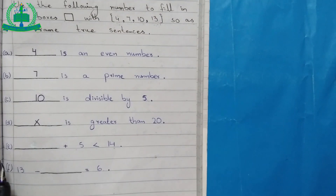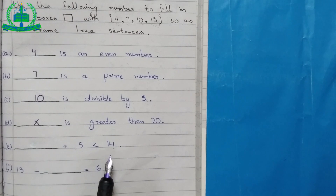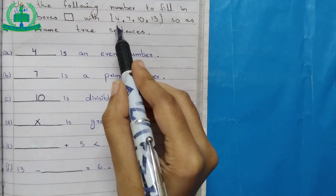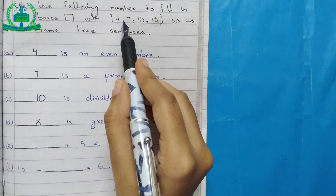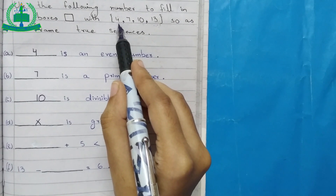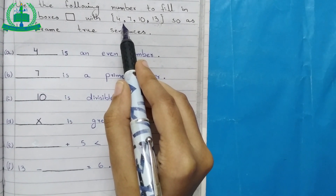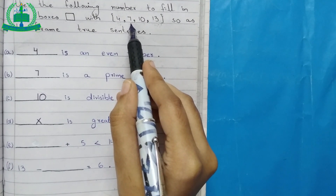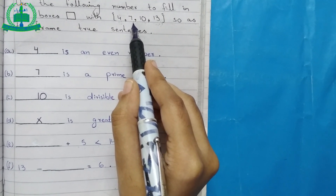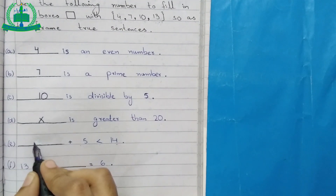E: A dash plus 5 is less than 14. From the options 4, 7, 10, 13 — 4 plus 5 equals 9, which is less than 14. And 7 plus 5 equals 12, which is also less than 14. But we write only one answer, so we write 4.